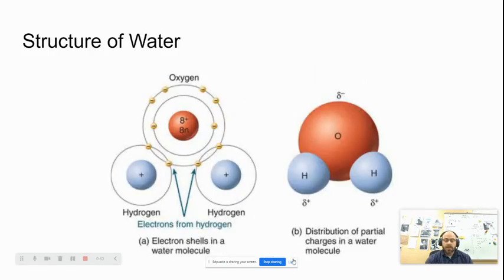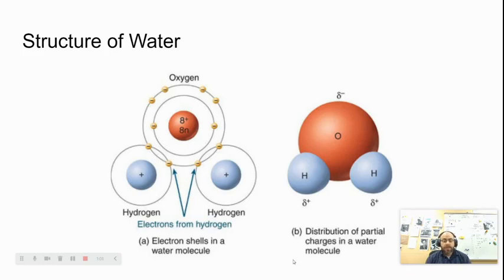A water molecule is composed of one oxygen atom and two hydrogen atoms. The oxygen atom has eight protons and eight electrons. The hydrogen atoms have one proton and one electron each — because there are two hydrogen atoms. Protons and electrons are really attracted to each other, and the protons do not leave the nucleus. The electrons are free to float around, and because the atoms in the water molecule are covalently bonded, they share those electrons. You have ten electrons associated with this water molecule — eight for the oxygen and one for each hydrogen.